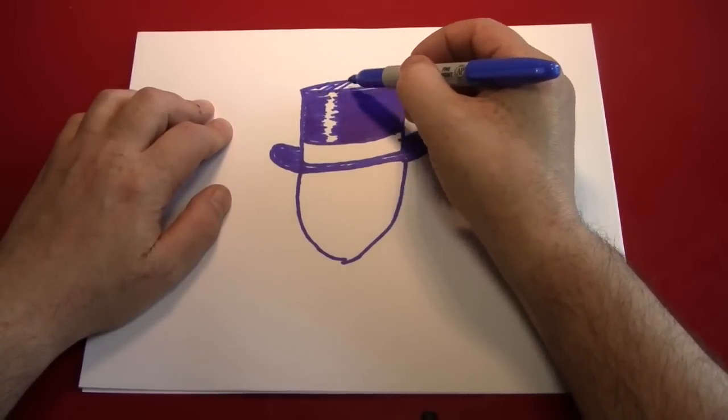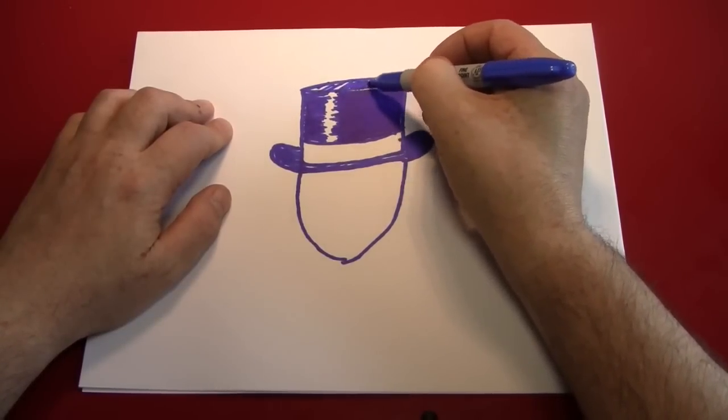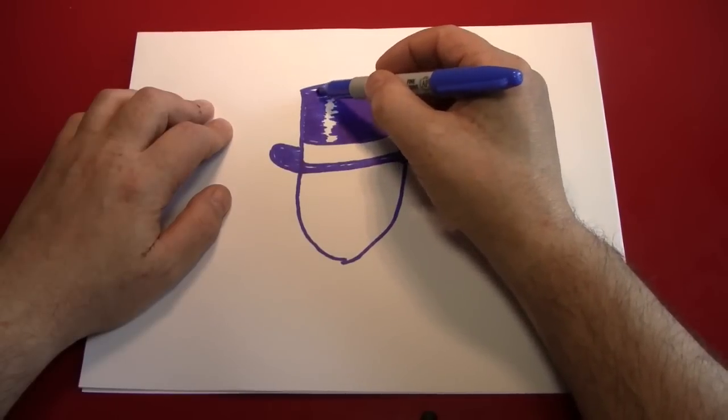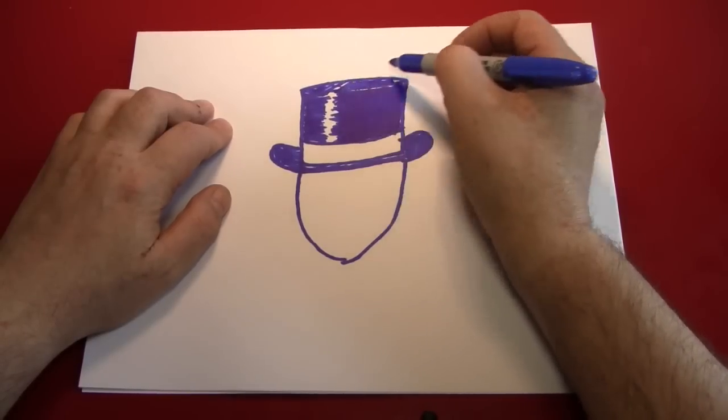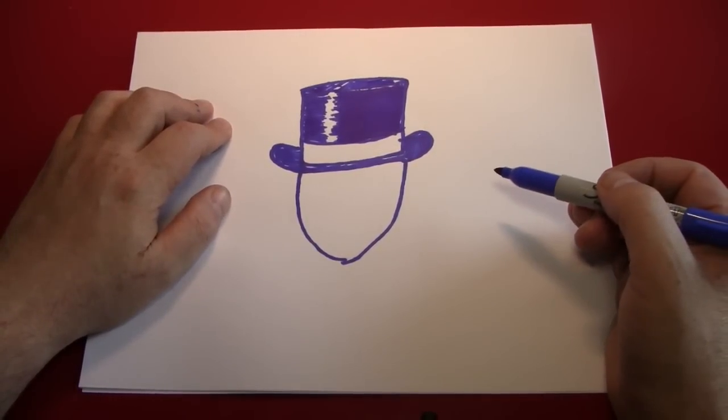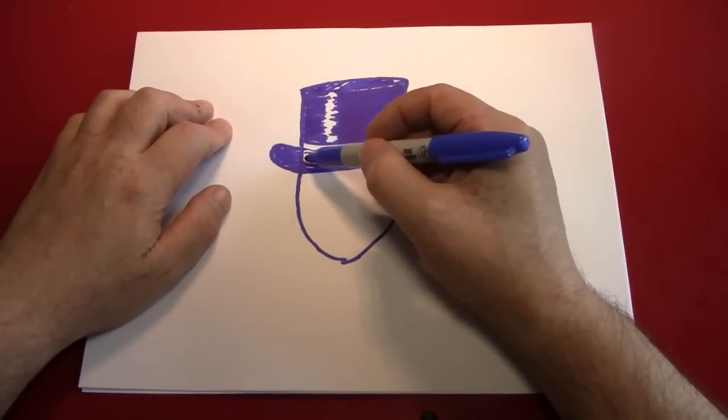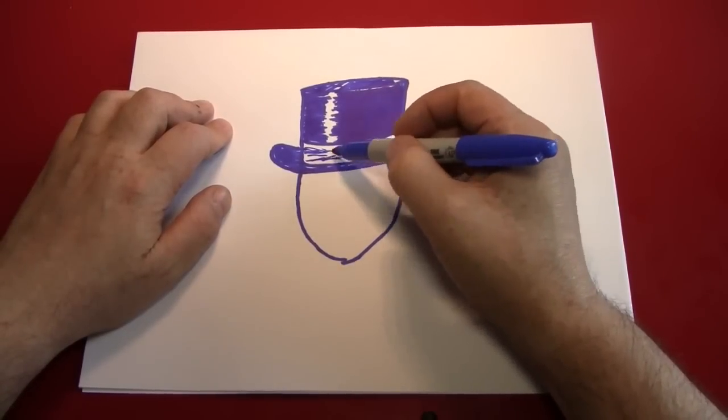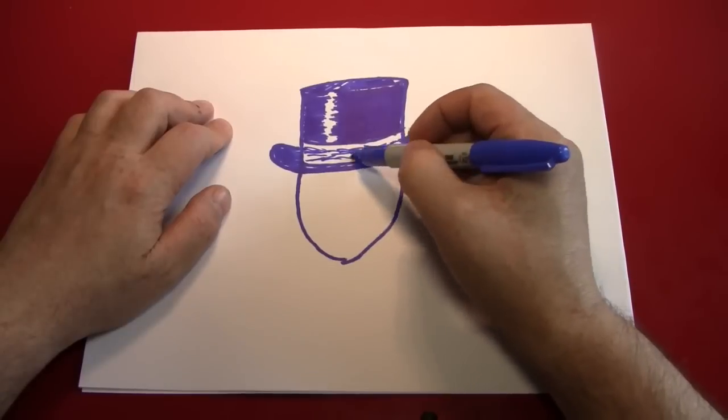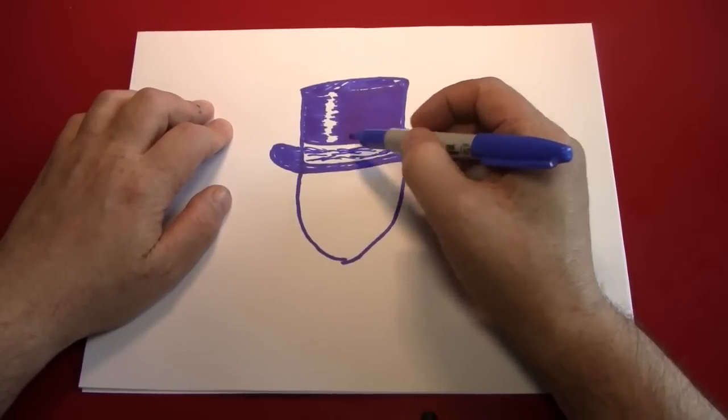Then we're going to color in the top. Not going to go too crazy about it. That's good enough. And we're almost done. A little bit of texture to the hat band here, just some little lines going across, indicating that it's lighter than the rest of the hat.